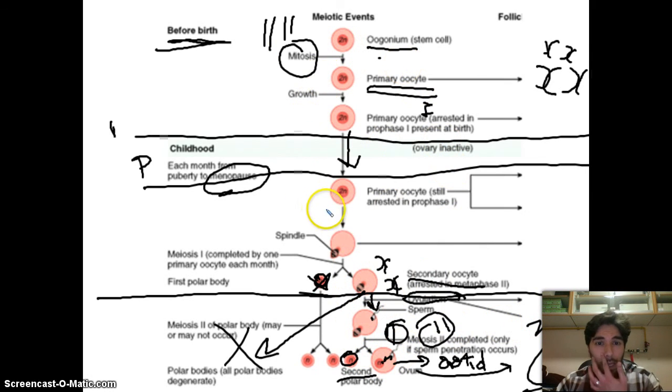If we want to compare oogenesis to spermatogenesis, it's not continuous. It starts before birth and produces one per month. It produces only one cell, not four. At a certain age, the woman will reach menopause, where the whole thing stops and she doesn't produce any more eggs. These are the two processes of spermatogenesis and oogenesis. I hope these are helpful, and thank you.